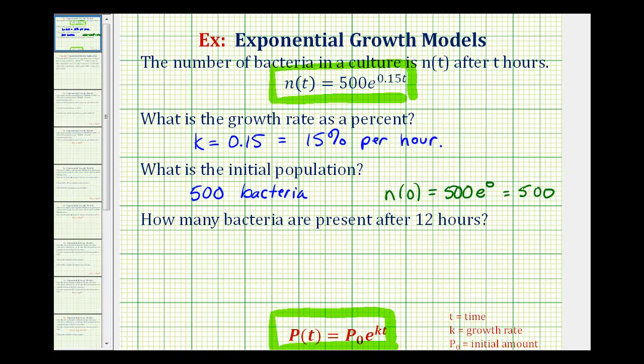And then for the last question, we want to know how many bacteria are present after 12 hours. So they're telling us that t is equal to 12, so we want to find n of 12, which would be 500 times e raised to the power of 0.15 times 12.